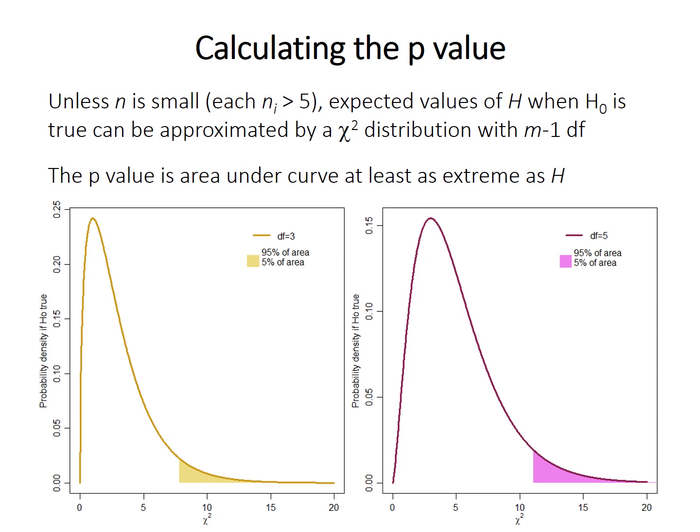Unless you have quite small sample sizes — small being like 5 or less — the expected values for the H statistic, if the null hypothesis is true, come from a statistical distribution called the chi-squared distribution. The degrees of freedom for this distribution are the number of samples minus 1, written as M minus 1. The p-value is therefore the area under the chi-squared probability density function curve for values at least as extreme as the observed H statistic.